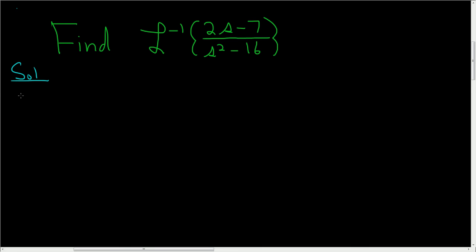First thing to notice is that we're going to be using these formulas. The inverse Laplace transform of s over s squared minus k squared is equal to hyperbolic cosine of kt.